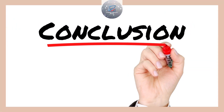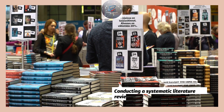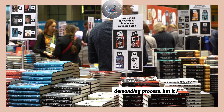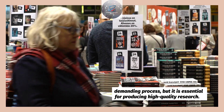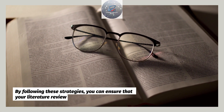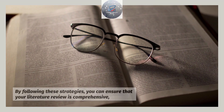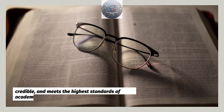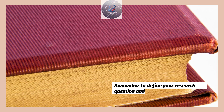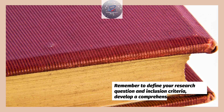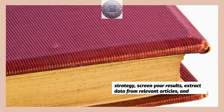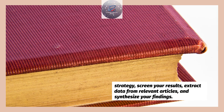Conclusion. In conclusion, conducting a systematic literature review is a rigorous and demanding process, but it is essential for producing high-quality research. By following these strategies, you can ensure that your literature review is comprehensive, credible, and meets the highest standards of academic excellence. Remember to define your research question and inclusion criteria, develop a comprehensive search strategy, screen your results, extract data from relevant articles, and synthesize your findings.